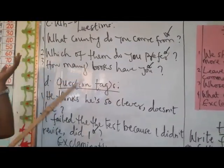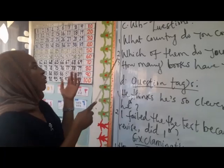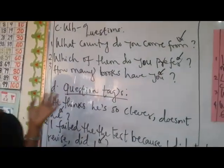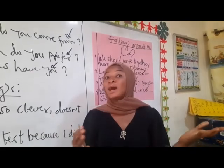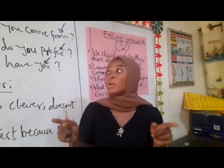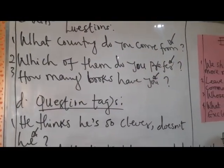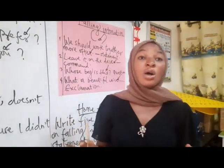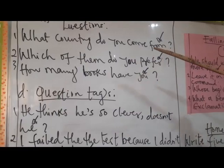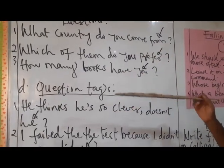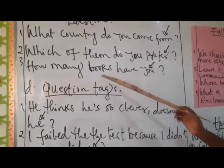Here we have wh-questions, which include: what, where, who, and how. Number one: 'What country did you come from?' When saying this kind of question, it can be in a mild tone or a commanding tone — it depends on the context of the sentence. Number two: 'Which of them do you prefer?' Number three: 'How many books have you?'